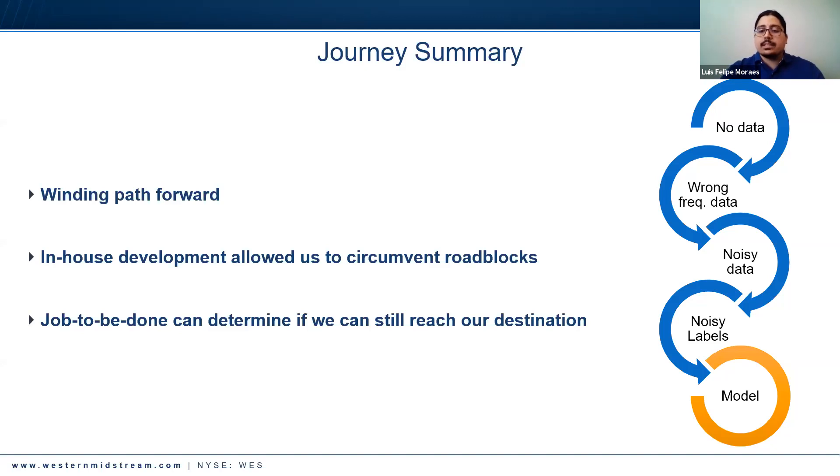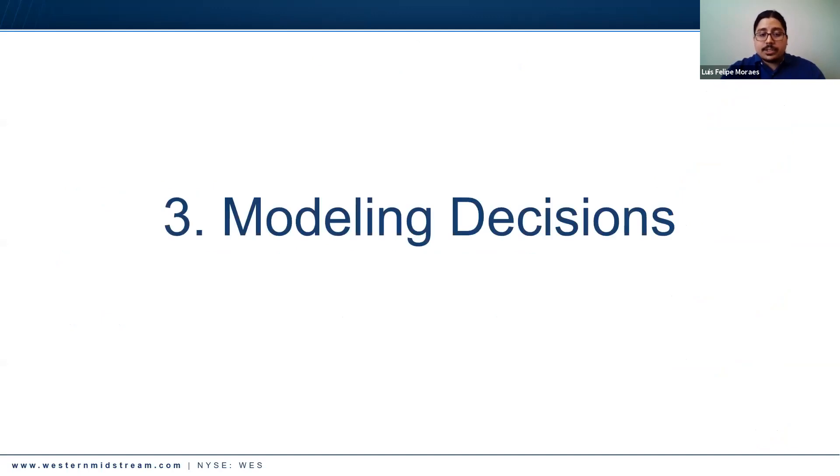Also, the job to be done was critical in helping us determine if we could still reach our destination at every point we encountered an obstacle. For instance, we have the wrong frequency of data - can we still move forward with this project? It was a matter of: can we still provide that job to be done even though the wrong frequency of data was available, or noisy data was available, or noisy labels were available?